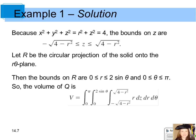The volume of the solid region is expressed as a triple integral dV, where dV is written as r times dz times dr times d theta. The inside bounds are your bottom z to the top z, the bounds for r go from 0 to 2 sine theta as given in the original problem, and the bounds for theta go from 0 to pi.